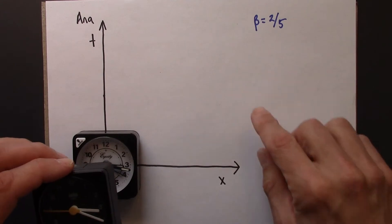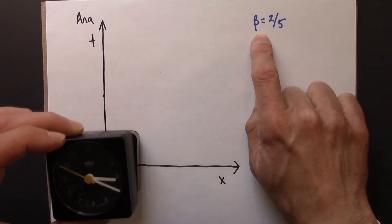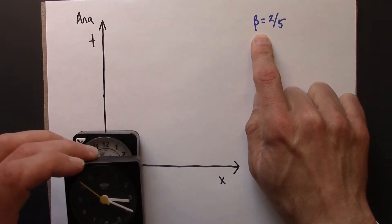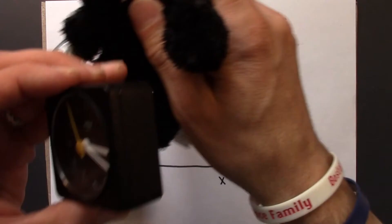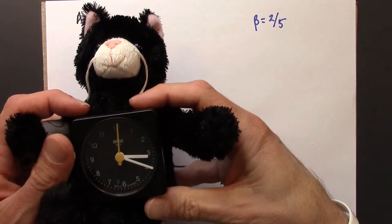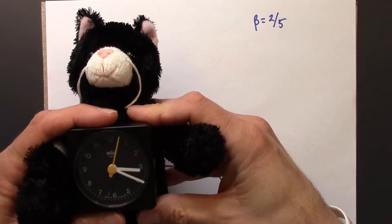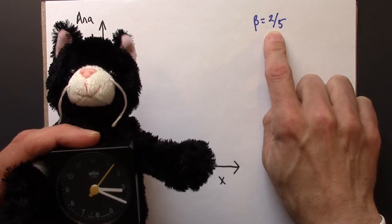And for the sake of concreteness, let's say that the speed of Beowulf and his clock is 2 over 5 in special relativity units, 0.4. So what is the time axis for Beowulf? How would we think about drawing that given that Beowulf is moving with a speed like this?